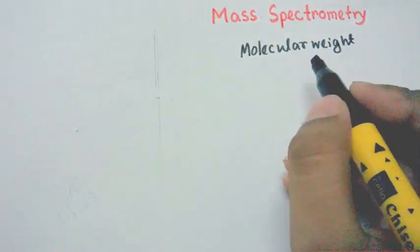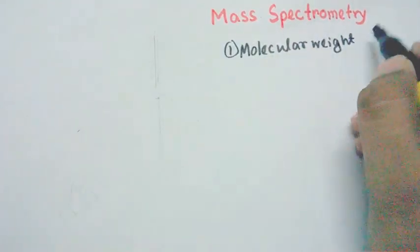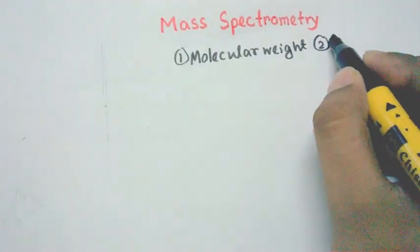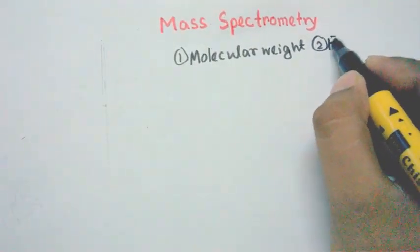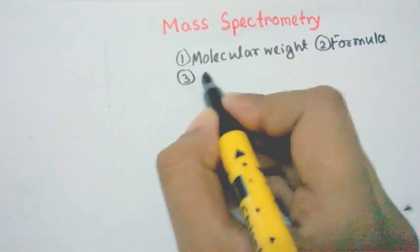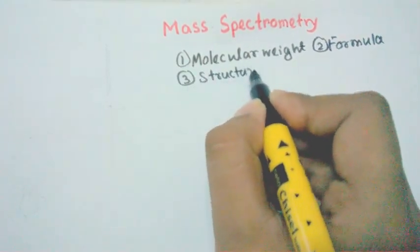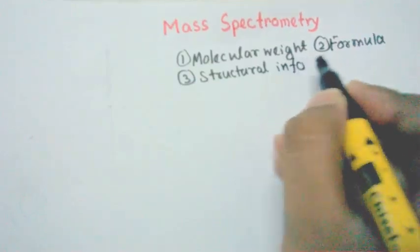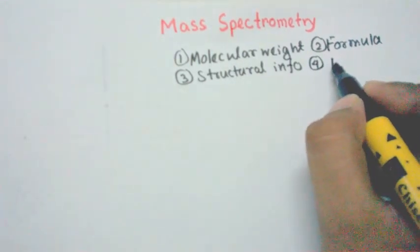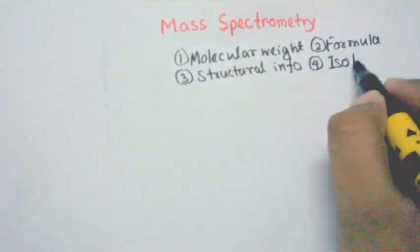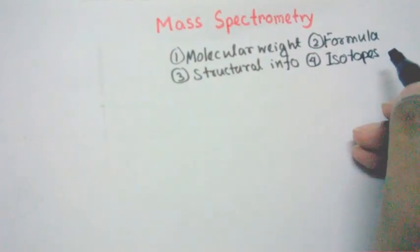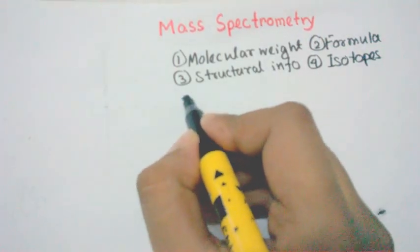Mass spec can also give us the molecular formula. It can give us some structural information. It can give us information about isotopes. And sometimes it can give us protein sequence, but that's a special case.